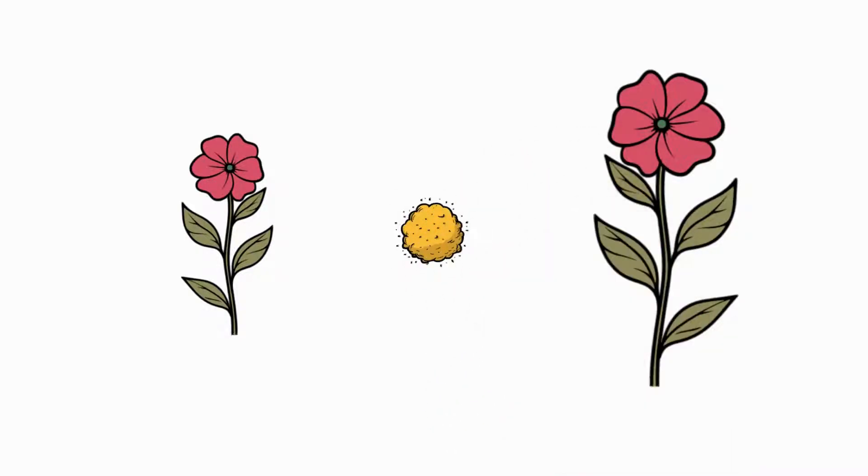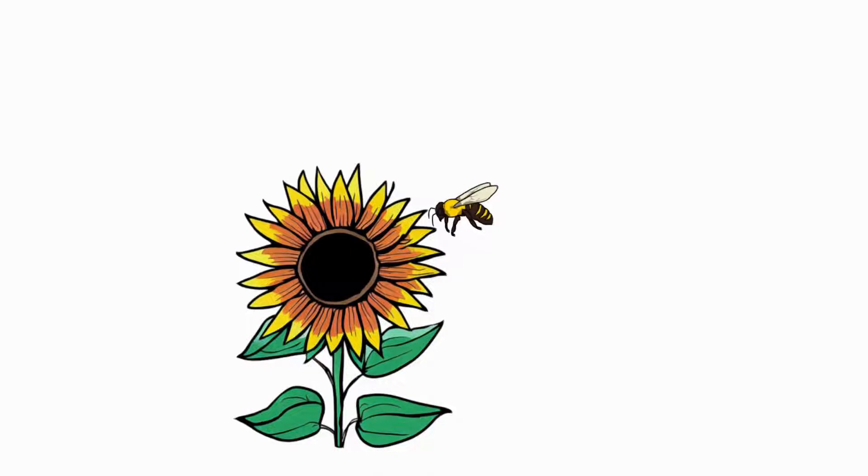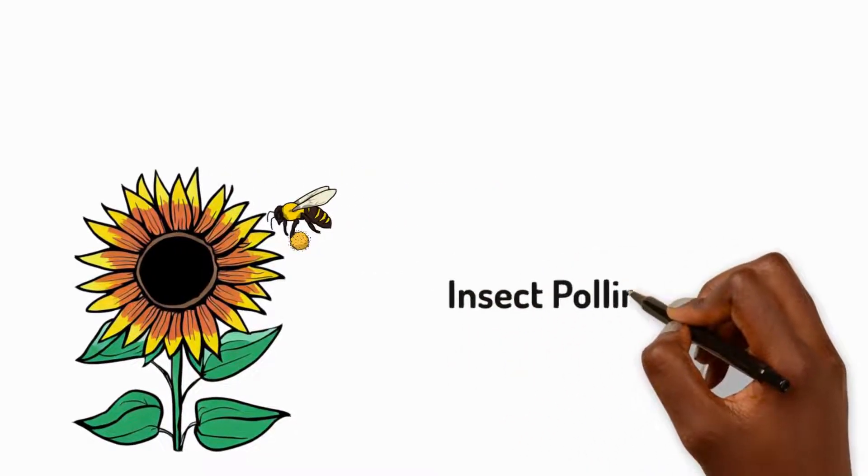With a little help of course. Flowers offer nectar, a sweet treat. As insects sip it, they pick up pollen. This is called insect pollination.